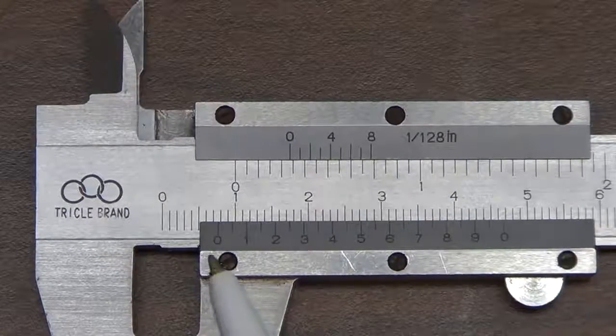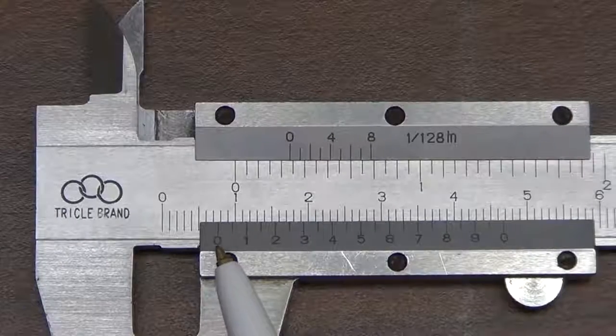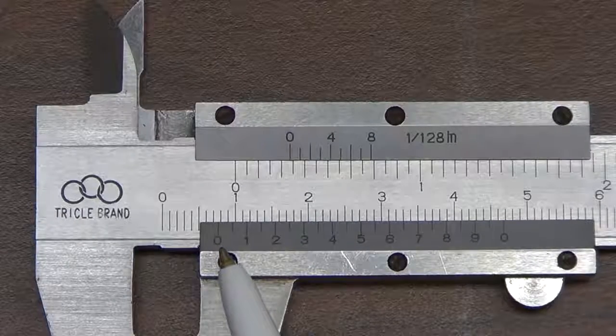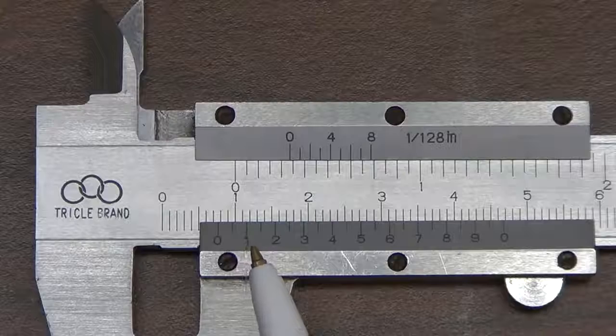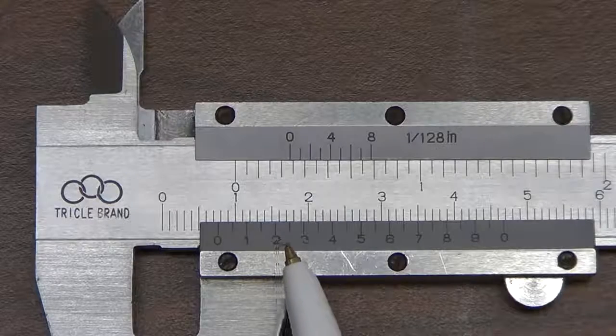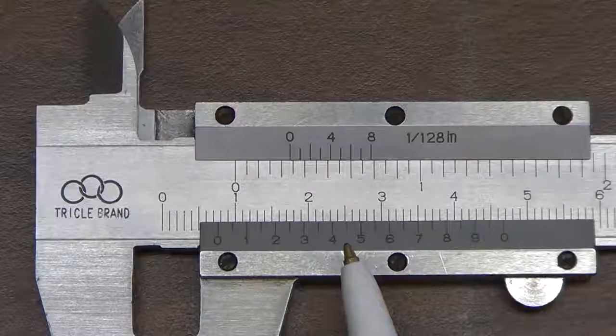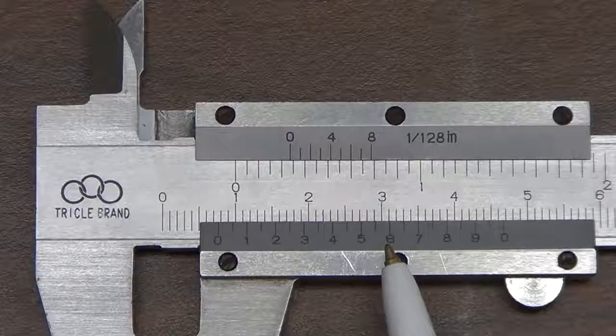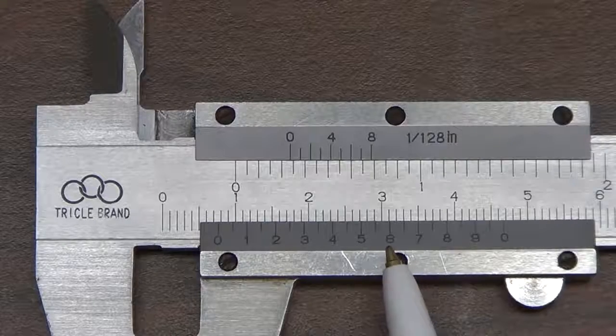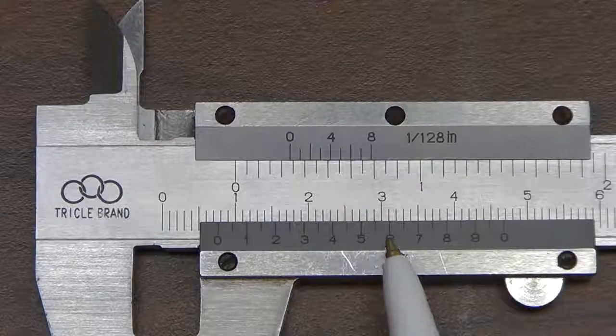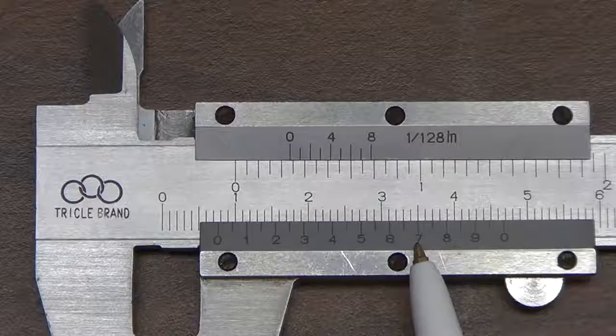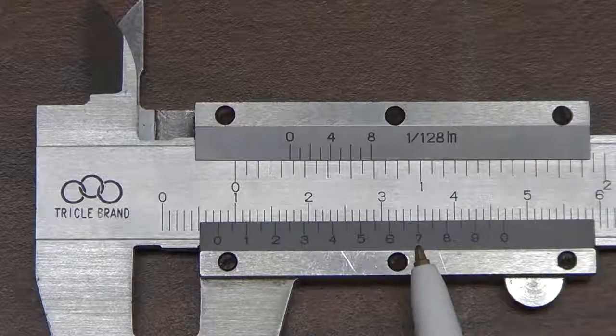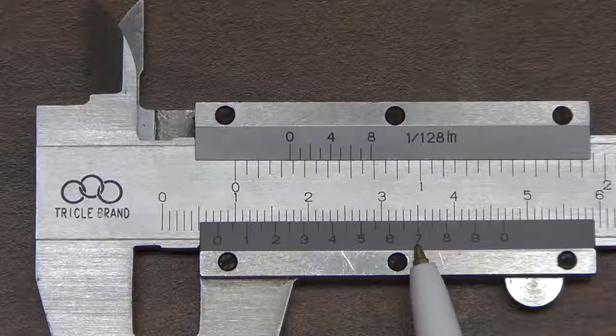Since the 0 here doesn't line up with the major scale exactly, we need to find where on the minor scale it does. So there's no match here until we reach, say, the 6 value. So on the minor scale the 6 mark lines up pretty well. You could even say the 7 mark lines up better. So we'll take this 7 as our minor scale measurement.